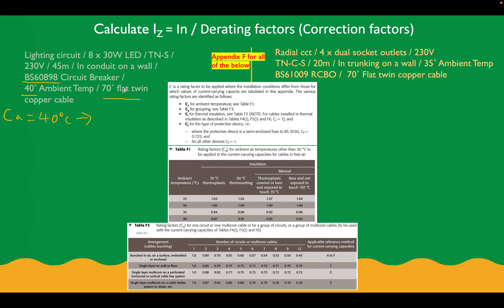So CA on this circuit is equal to 40 degrees Celsius. We've got 70 degree flat twin copper thermoplastic cable and a 60898 breaker. Looking at the ambient temperature table at 40 degrees for a 70 degree thermoplastic cable, our correction factor CA is going to be 0.87. It's as simple as that — just navigate the table and get our correction factor.